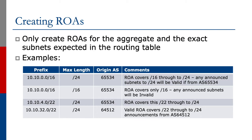The first line shows the prefix 10.10/16. It declares a max length of /24 and origin AS65534. This means that the ROA covers 10.10/16 and all subnets through to and including a /24. All these will be valid if they originated from AS65534, which means any subnet out of 10.10/16 up to a /24 will be valid.